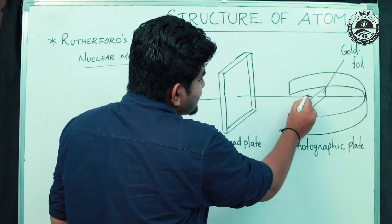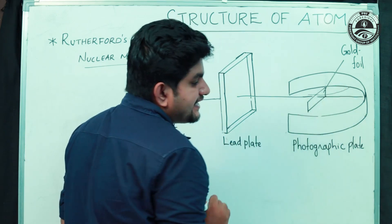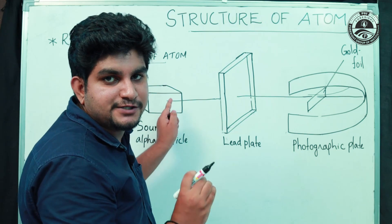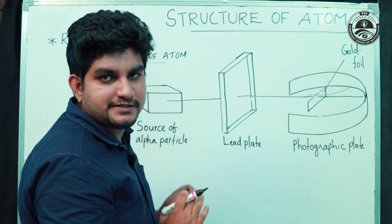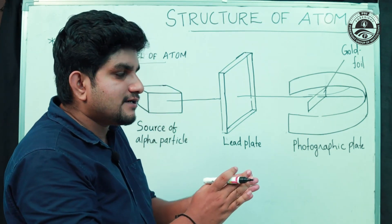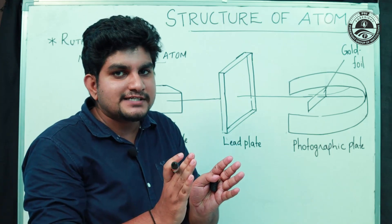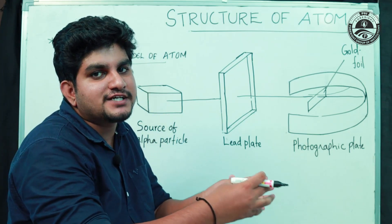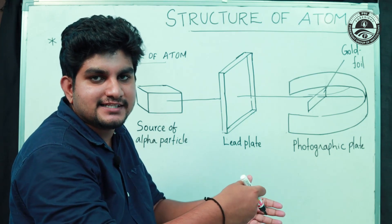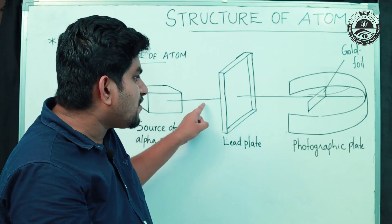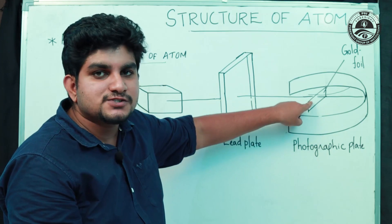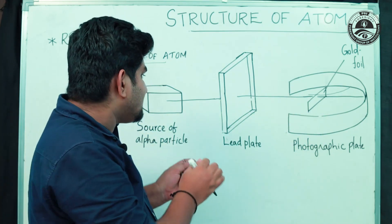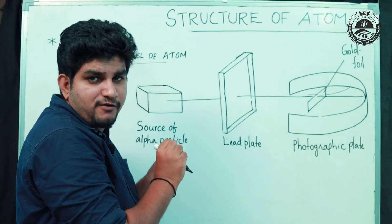Some alpha particles show no deviation. There is a small number of alpha particles that undergo small deviation. Most of the alpha particles pass through the foil without any deviation, while some pass through with a small deviation.